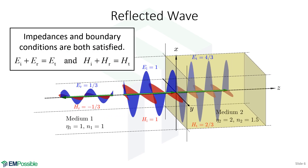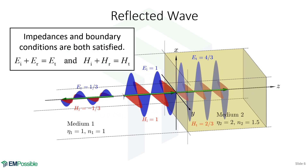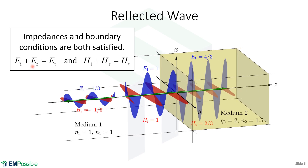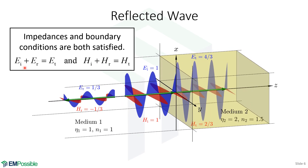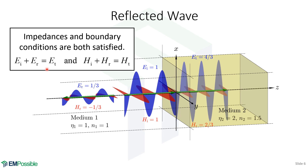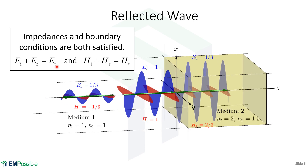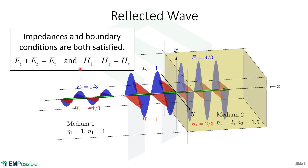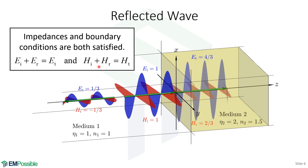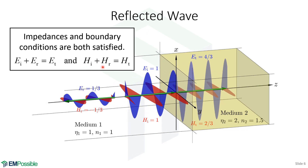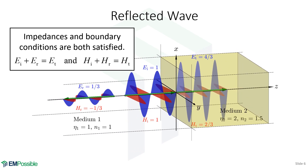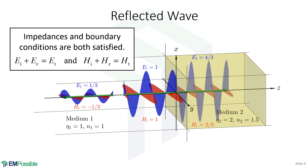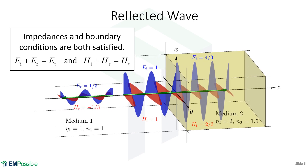So it's the sum of the waves — the total field — on either side of the interface that has to satisfy boundary conditions. The total field does not have to satisfy the impedance; that's just on a wave-per-wave basis. When we look at the boundary conditions, incident plus reflected is the total field on the left side of the interface, and that equals the total electric field on the right. The same thing for the magnetic field — we add the incident and reflected and set that equal to the total field on the right, which in this case is just the transmitted wave.